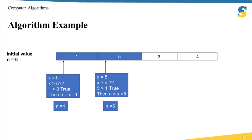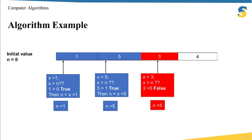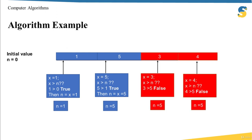I do the same comparison for 3 and 4. In both cases I find that the value is smaller than N, so the value of N will not be updated and I keep the value 5 inside N. Now because I reached the final item, which is 4, no more comparisons are required, and the variable N will hold the largest number, which is 5. And that's all for this example.